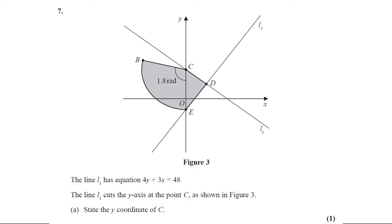Question number seven. You are given a figure. The line L1 has equation 4y plus 3x equals 48 and it cuts the y-axis at point C. Part A: state the y-coordinate of C. This question carries one mark.